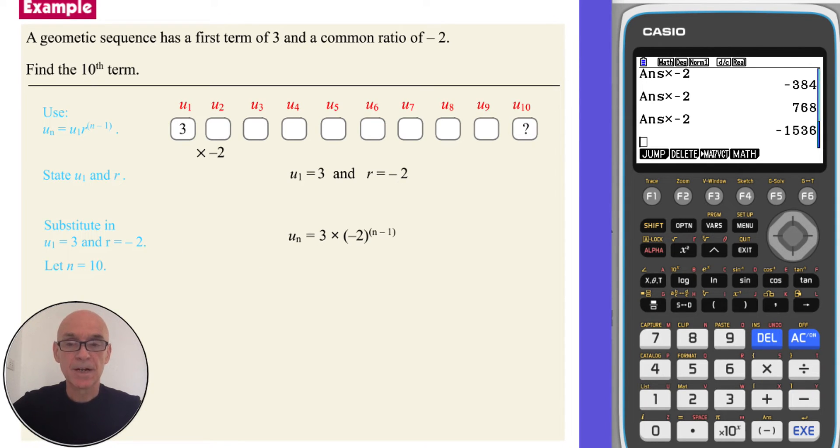Then to find the tenth term in this sequence we simply replace n with 10, as shown, again giving the same value. So as before the tenth term is negative 1,536.